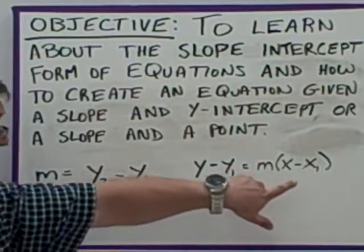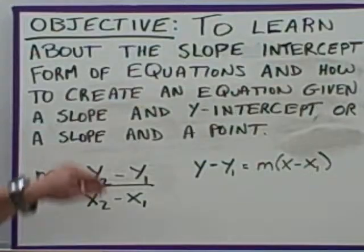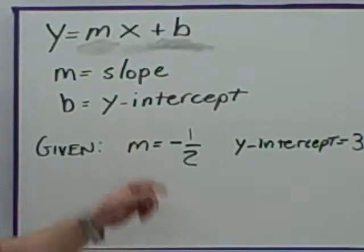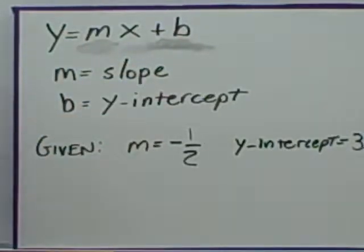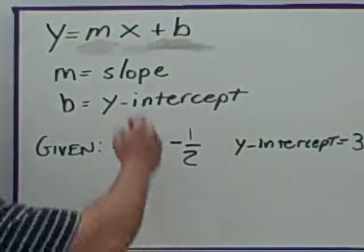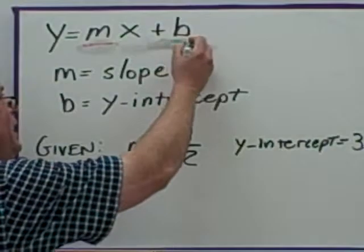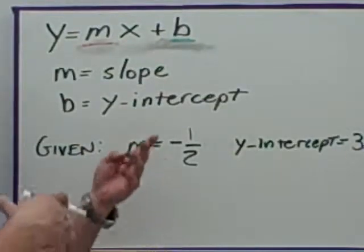Point-slope form is where if you have a point and the slope you can write the equation. This is also the equation to find the slope. The form y equals mx plus b is the slope-intercept form of equations. It's called the slope-intercept form because the m value is your slope and the b is your y-intercept.